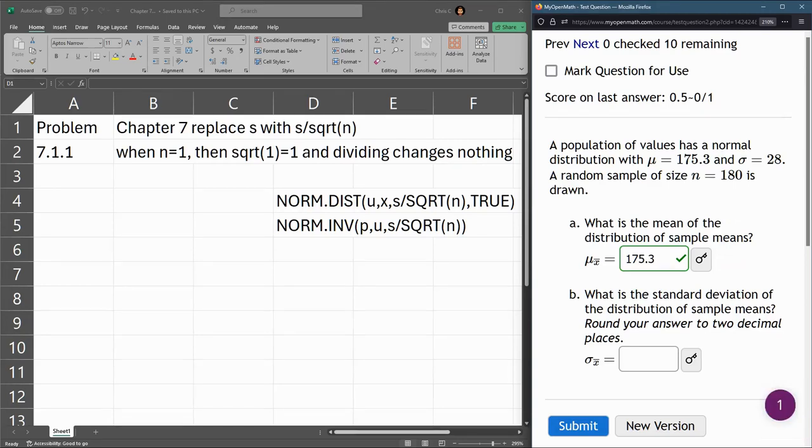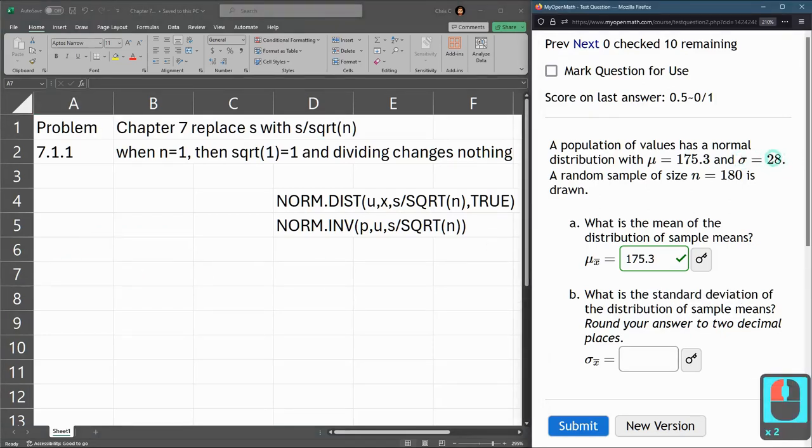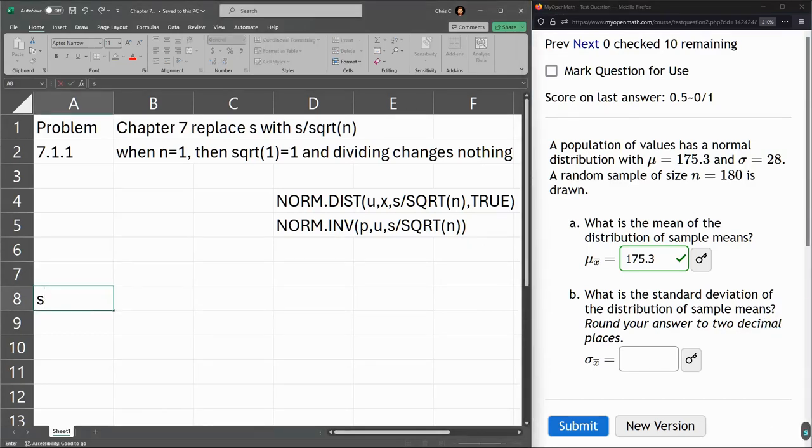But what does change is this standard deviation decreases as our sample size increases. And here's where we're going to take S and divide it by the square root of N. So the original standard deviation is 28. We're going to take S divided by square root of N.